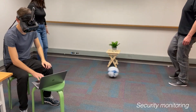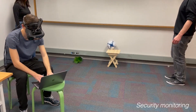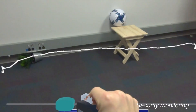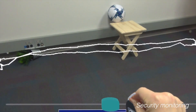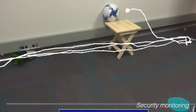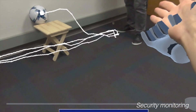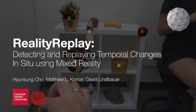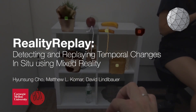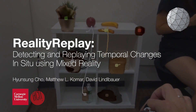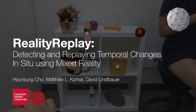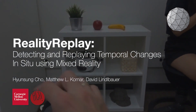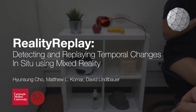Reality Replay can be used for personal security monitoring as well — for instance, figuring out the cause of an incident by detecting and replaying important changes in the scene. We believe Reality Replay enhances user spatiotemporal awareness by enabling them to replay important events in their immediate environment. Please read our paper to find out more details about Reality Replay.